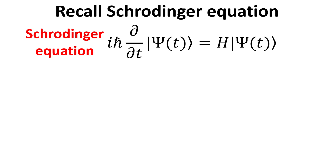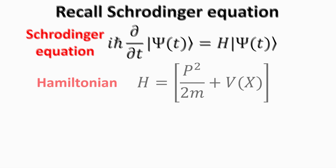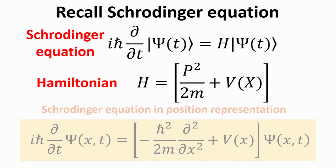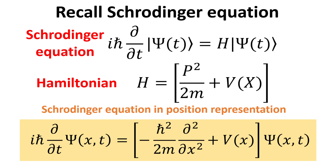We recall the Schrödinger equation in its abstract form, which describes how the state vector psi-ket evolves in time. H is the Hamiltonian, and corresponds to the observable energy, which comprises of the kinetic part expressed in terms of the electron momentum and the potential V, which depends only on the position x. This abstract form of the Schrödinger equation can be expressed in the position representation, yielding us the familiar form of the Schrödinger equation as shown in the yellow box. The left side involves a partial time derivative, while the right side involves a partial derivative in x and a potential that depends only on x.